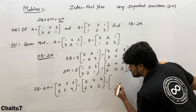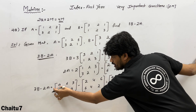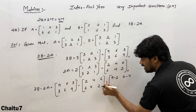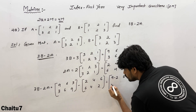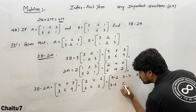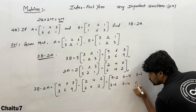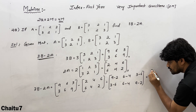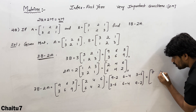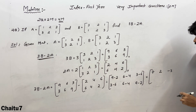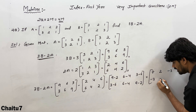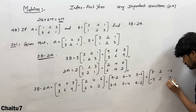3B − 2A = [9−2, 6−4, 3−6; 3−6, 6−4, 9−2] = [7, 2, −3; −3, 2, 7]. This is the final answer.